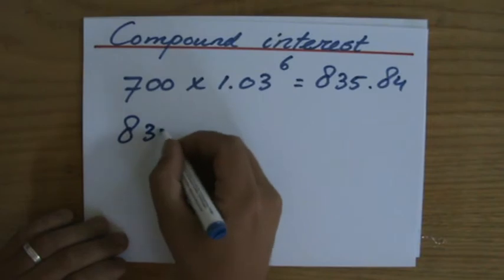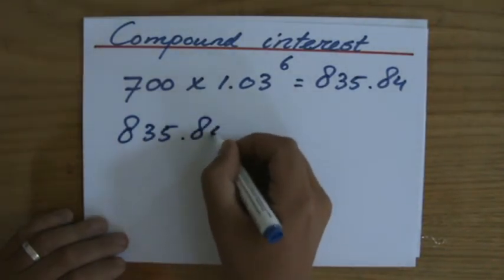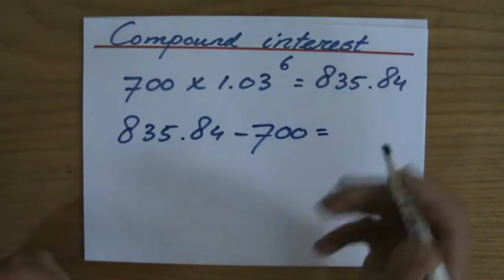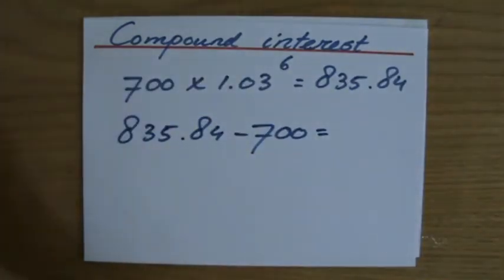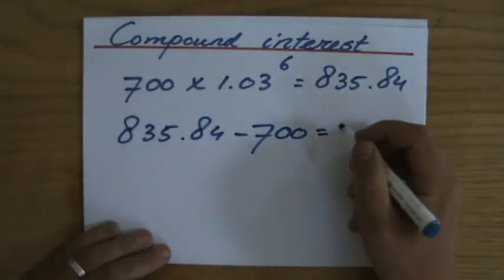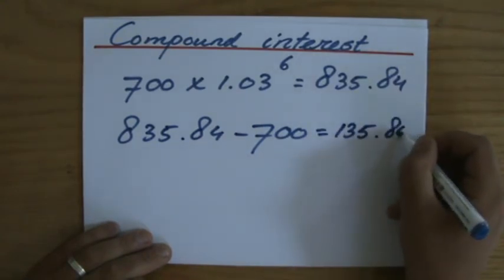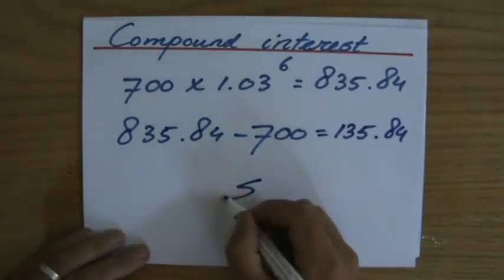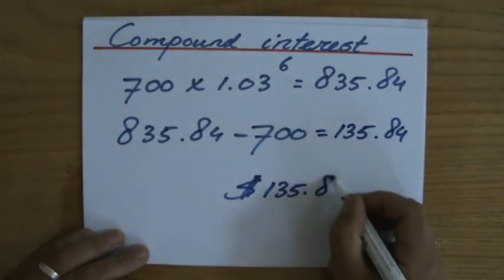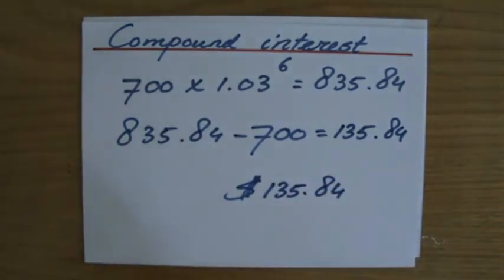You tell me a bank that pays me that much interest. No, I've got to subtract my starting capital and the amount of money I invested. And then I'm going to get my final answer, which is the amount of interest I receive, which is $135.84.